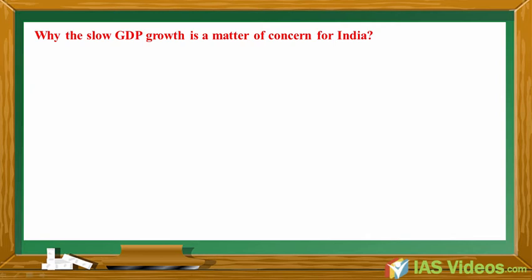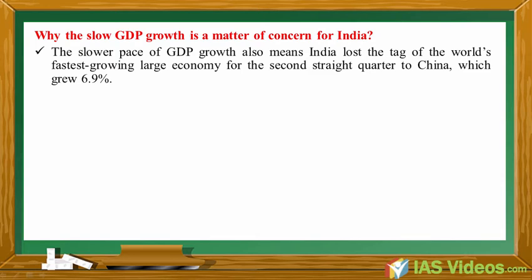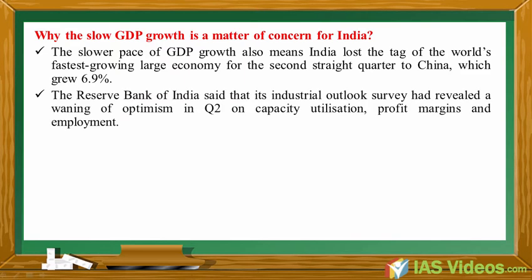Why the slow GDP growth is a matter of concern for India. The slower pace of GDP growth also means India lost the tag of the world's fastest growing large economy for the second straight quarter to China, which grew 6.9%. The Reserve Bank of India said that its Industrial Outlook survey had revealed a waning of optimism in Q2 on capacity utilization, profit margins and employment.